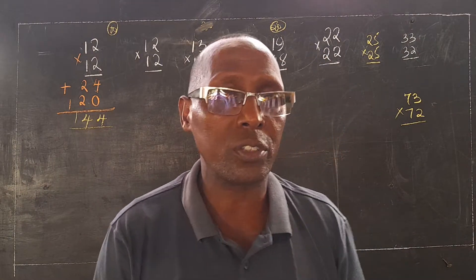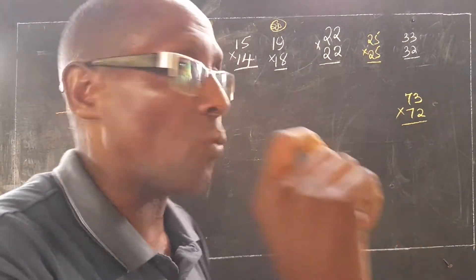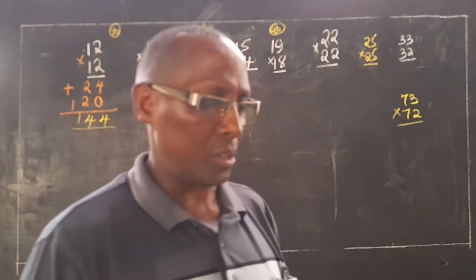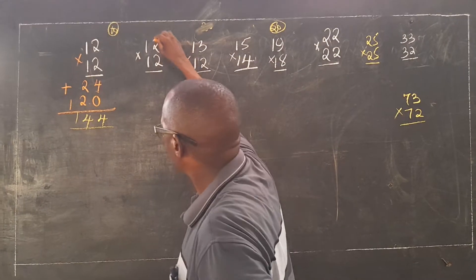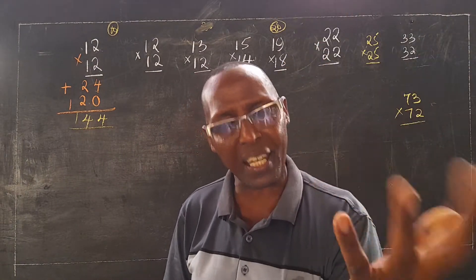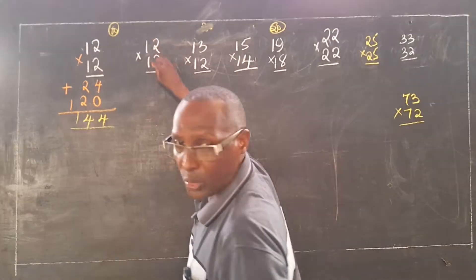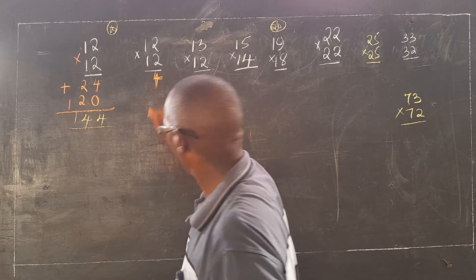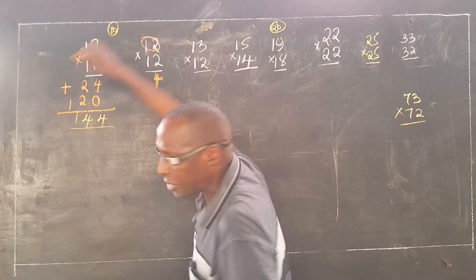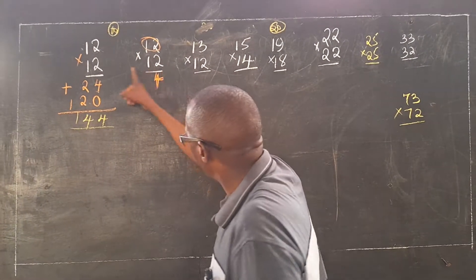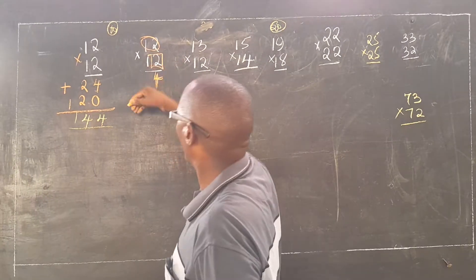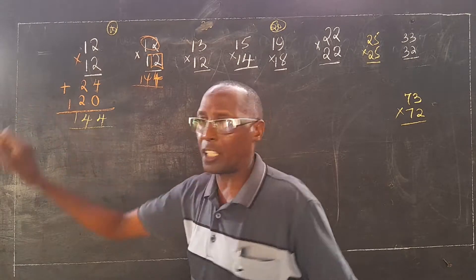Let me now come to the digital way of working, and especially the special method. Go to the number, look at the digits which are in the place value of 1s, and multiply them. 2 times 2 is 4. We are not carrying anything. So take the upper number — all of it, that is 12. Come to the lower number; pick the digit in the place value of 1s, that is 2. Add them: 14. That is your answer.